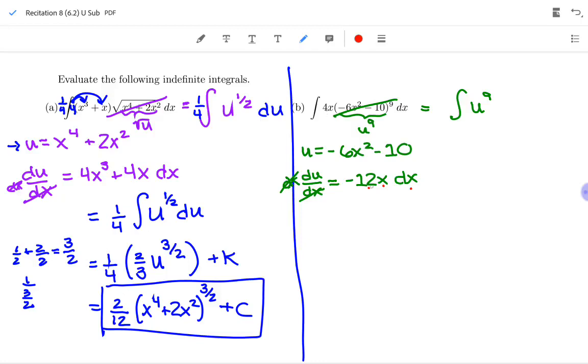So I need to change 4 to be negative 12. So what would I multiply 4 by to get to negative 12 on the inside? Negative 3. Negative 3 times 4x is going to give you negative 12x dx. If I want to put a negative 3 on the inside, then I have to do a 1 over negative 3 on the outside. So 1 over negative 3 on the outside will give me a perfect du on the inside.